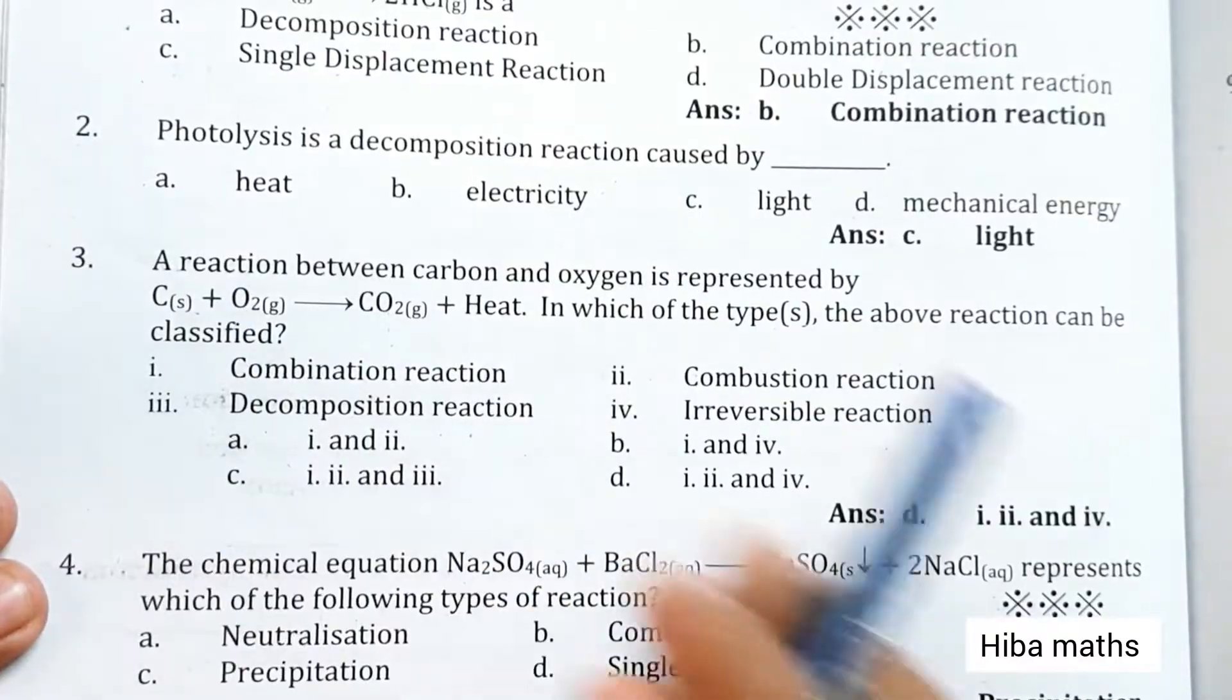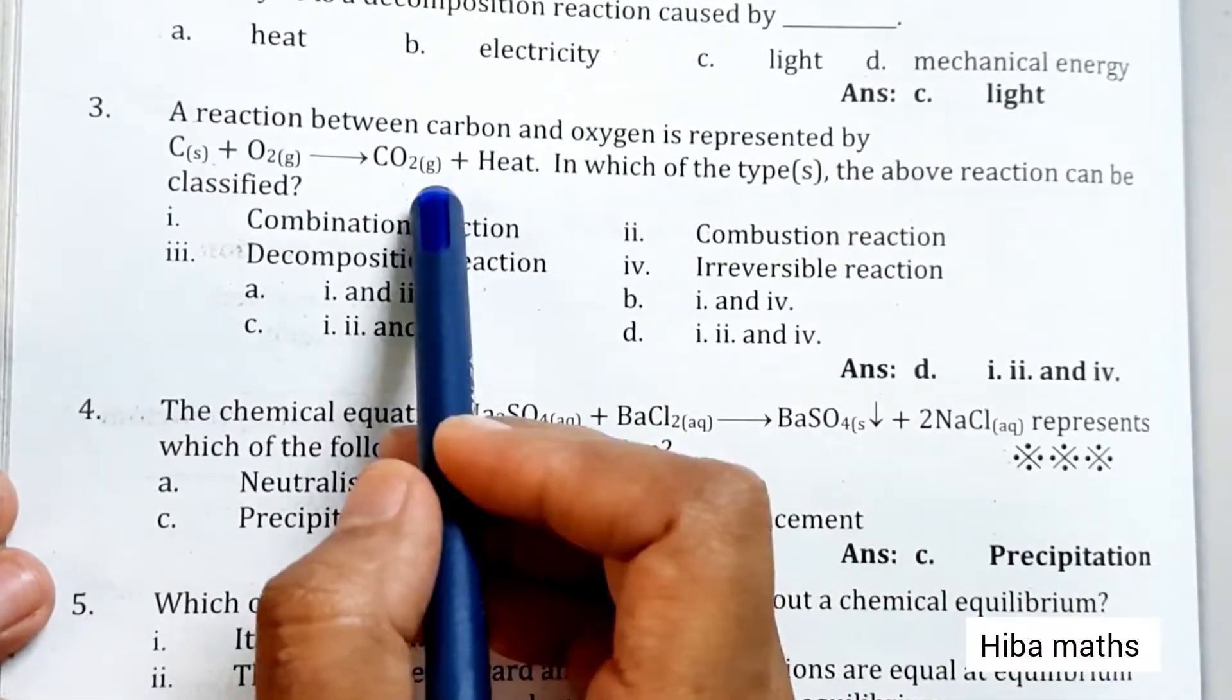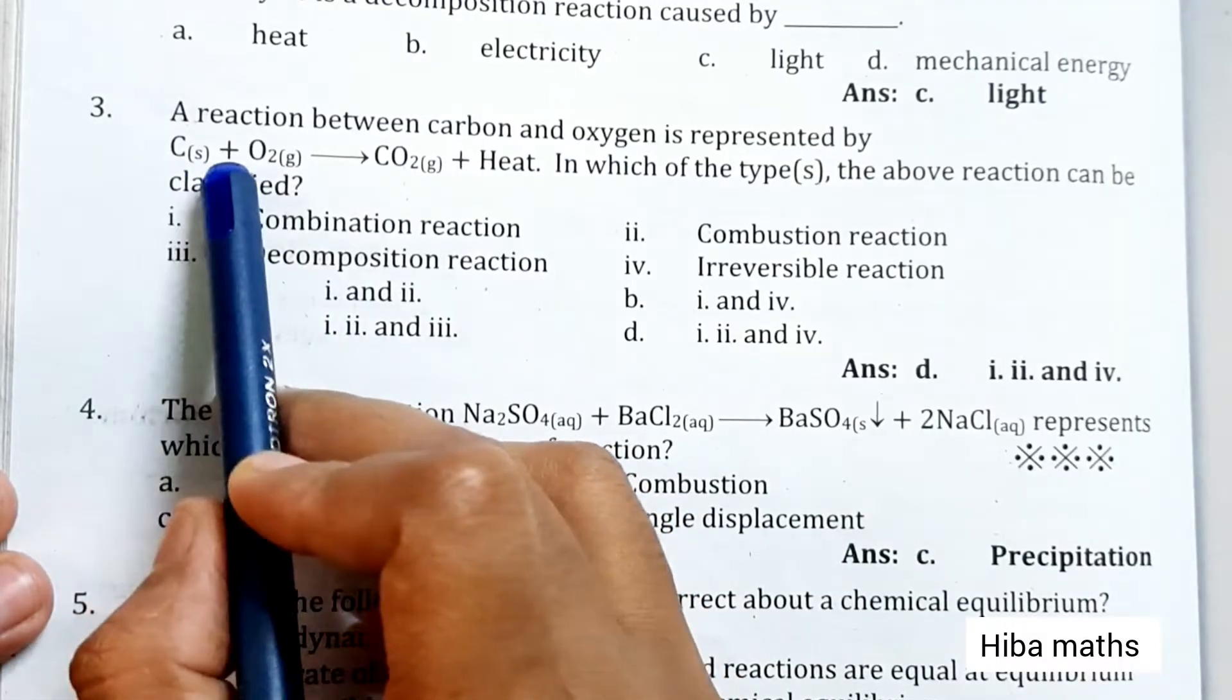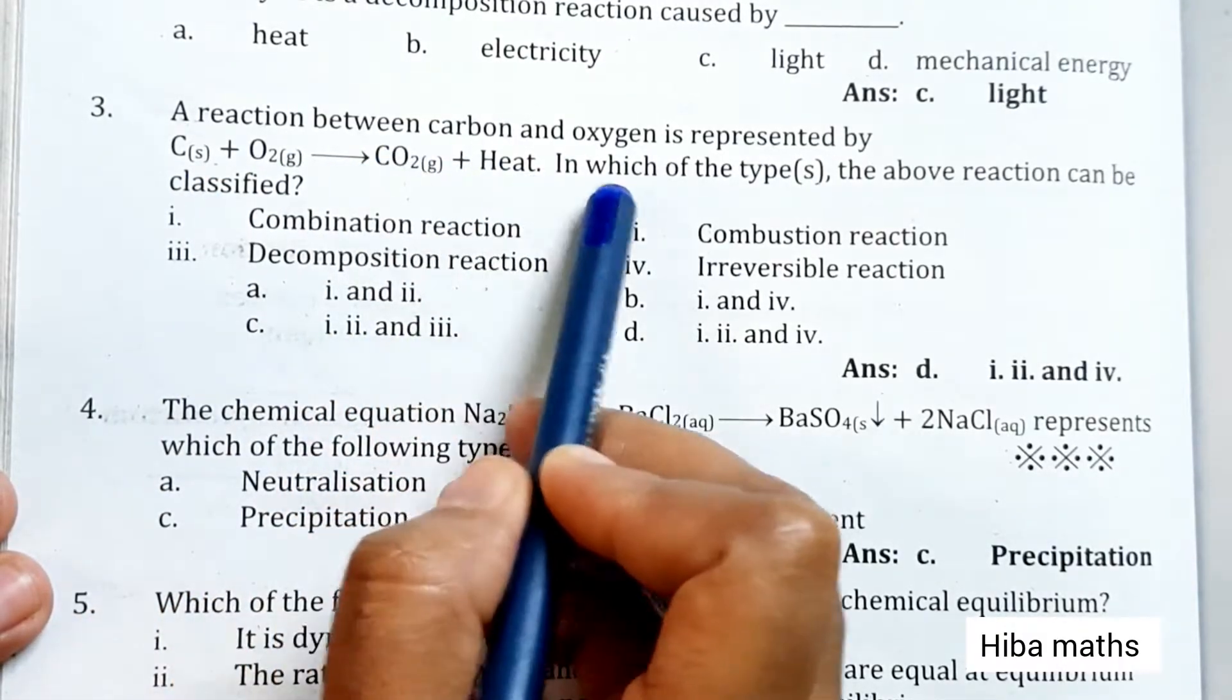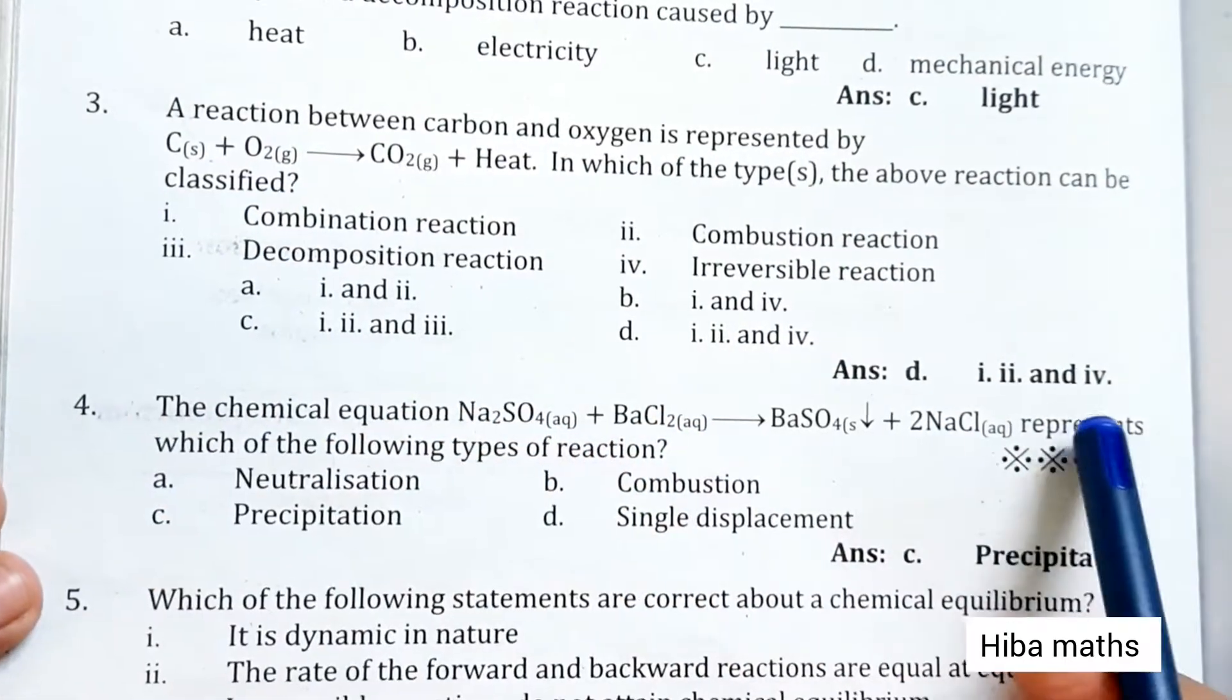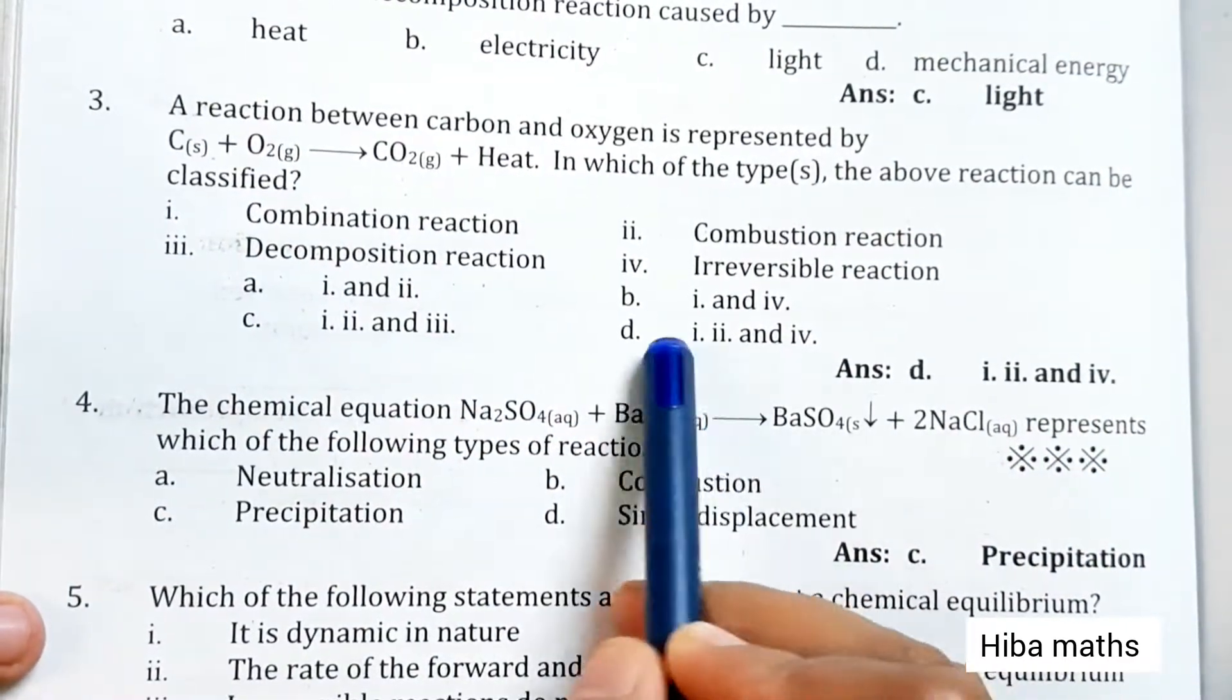A reaction between carbon and oxygen is represented by C plus O2 gives you CO2 plus heat. In which of the type can the above reaction be classified? The answer is option D: combustion and irreversible reaction.